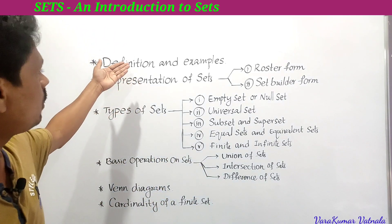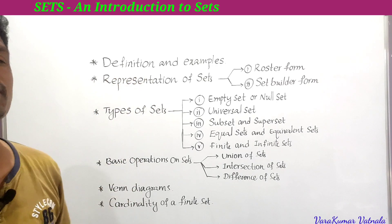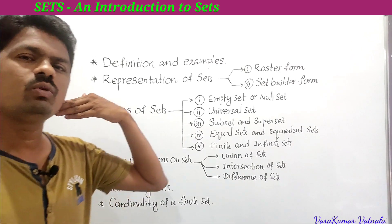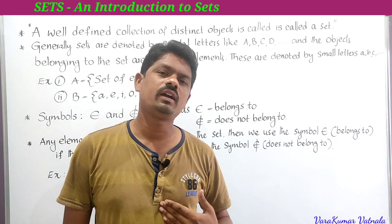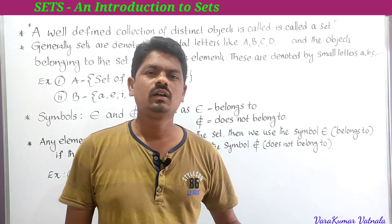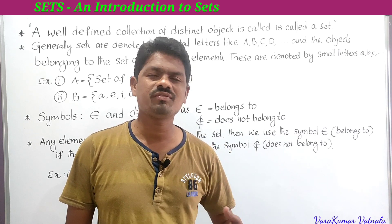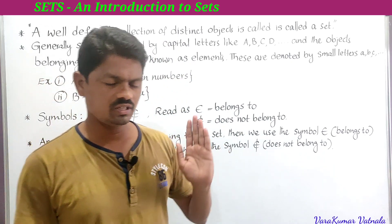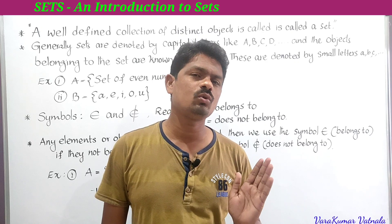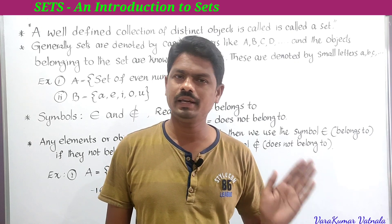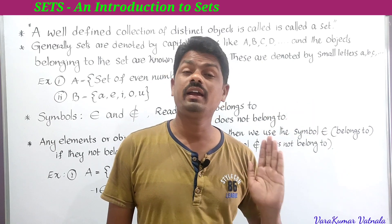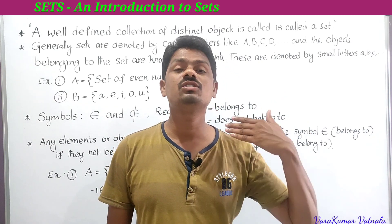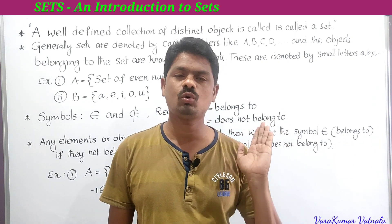First, we need to learn the definition, examples, and representation of sets before solving problems in Exercise 2.1. The definition: a well-defined collection of distinct objects is called a set. Generally, sets are denoted by capital letters like A, B, C, and so on. The objects in the set are called elements, and they are denoted by small letters like a, b, c, d, and so on.